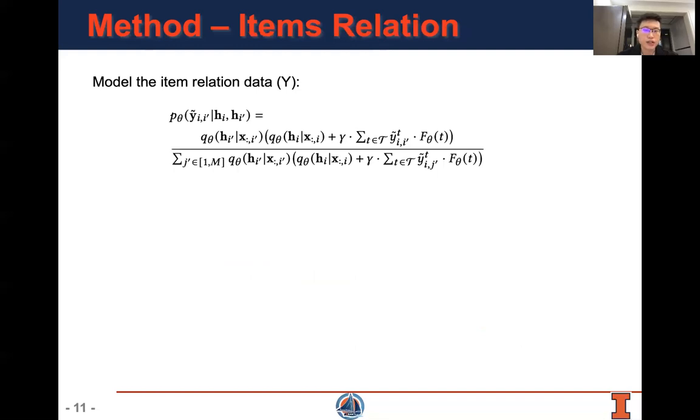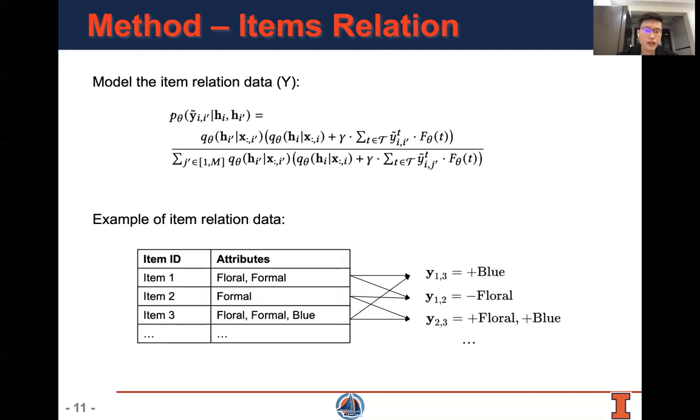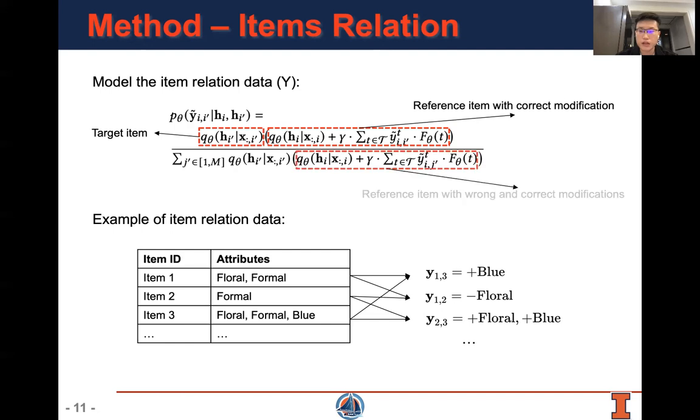CGR models the item relation data y using the following equation. An example of item relation data is in the following. For example, by comparing item i and item j, we can construct the item relation data y. In the equation, the upper left term represents the target item and the upper right term denotes the reference item with correct modification.